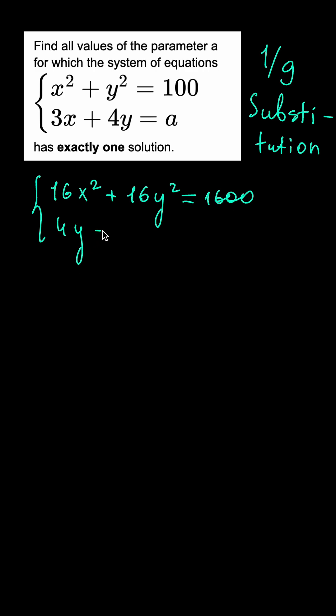So we have 4y equals a minus 3x and notice how the parameter now shows up in the first equation and we have simply a quadratic equation with one variable x.